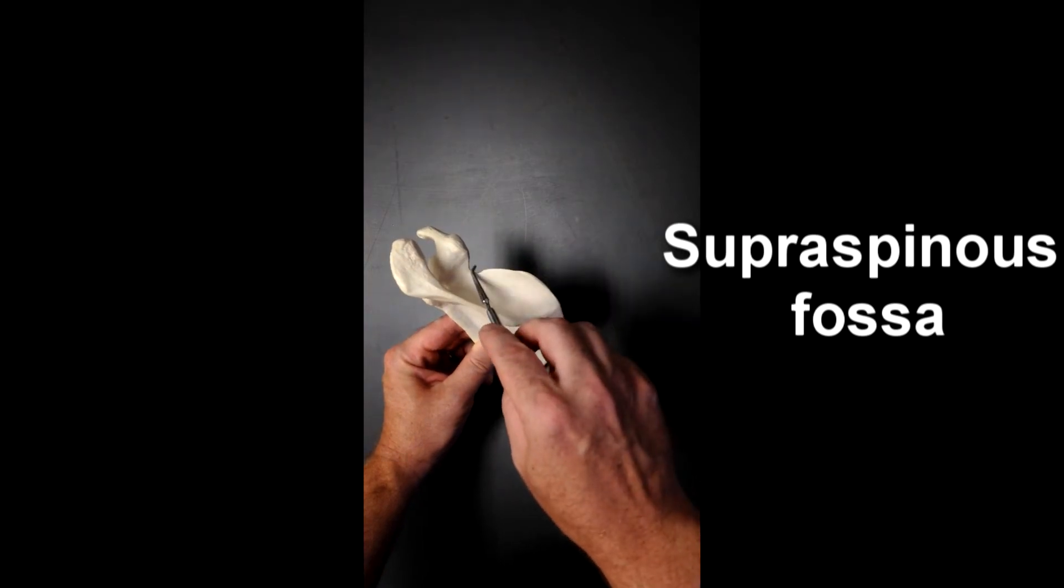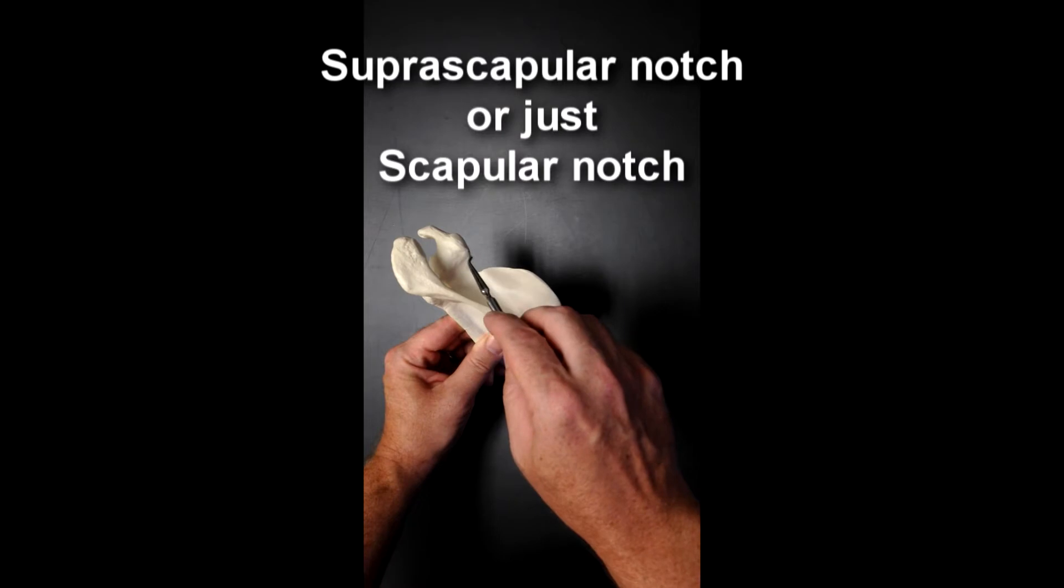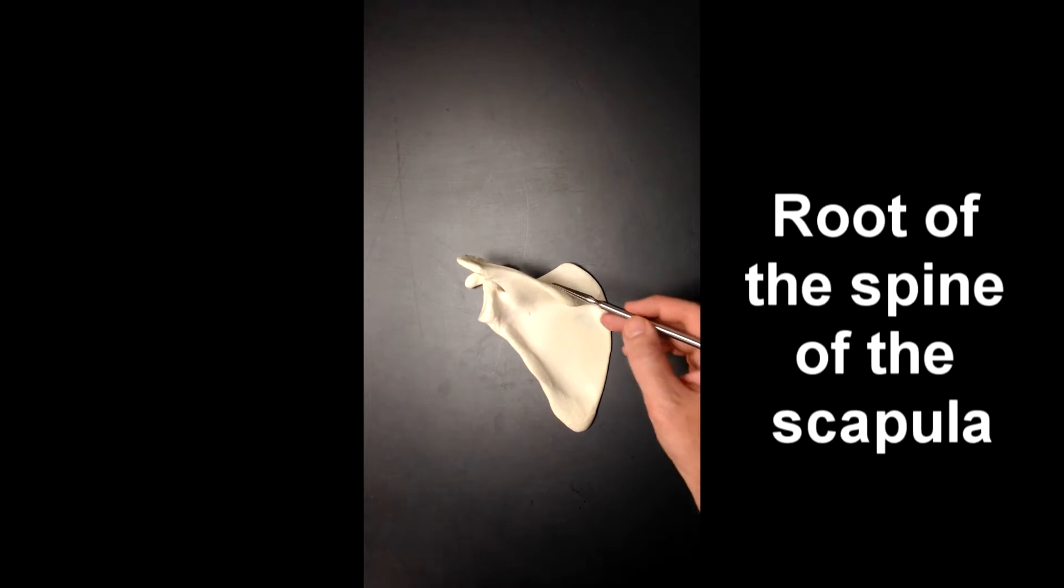Here, we have the suprascapular notch, or scapular notch. This structure right here, at the base of the spine of the scapula, you can kind of hallucinate a little bit and see a triangular shape right here. This would be the root of the spine of the scapula. There's going to be a muscle that's going to attach here, namely, the rhomboid minor muscle would attach here.